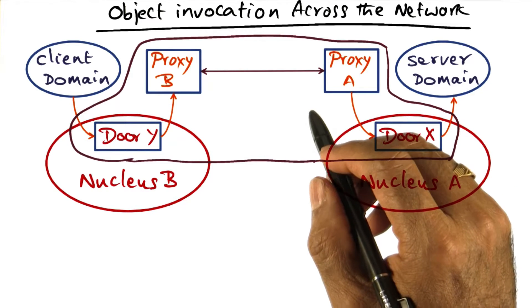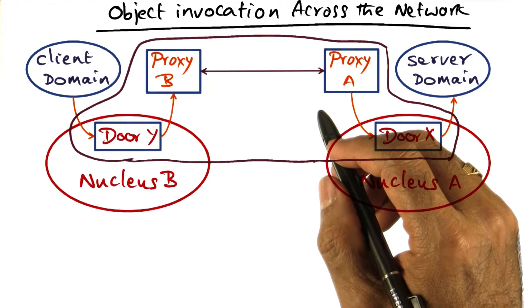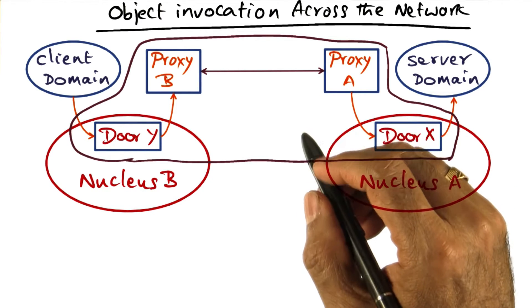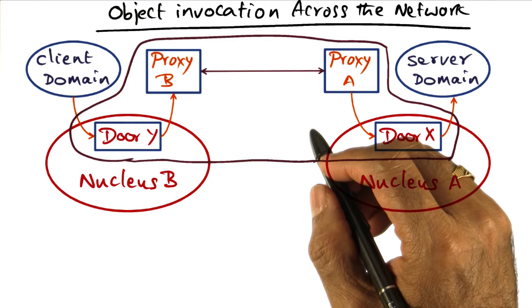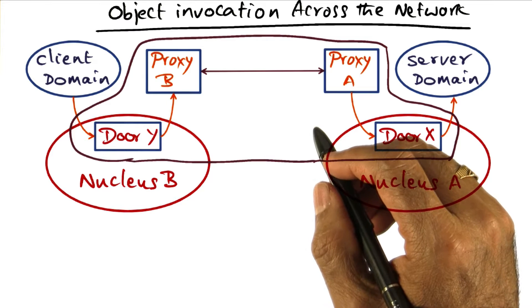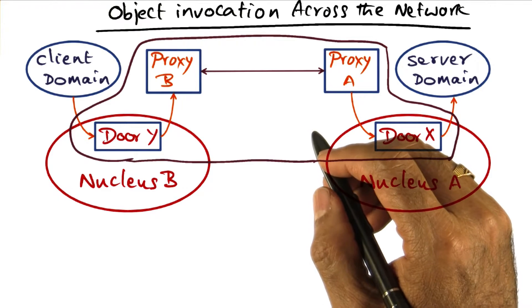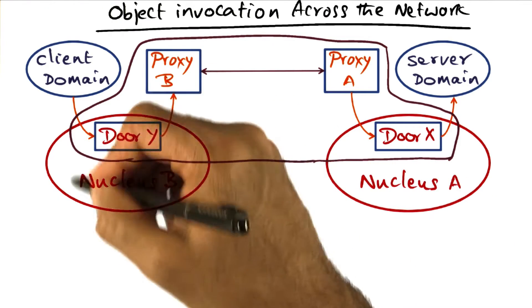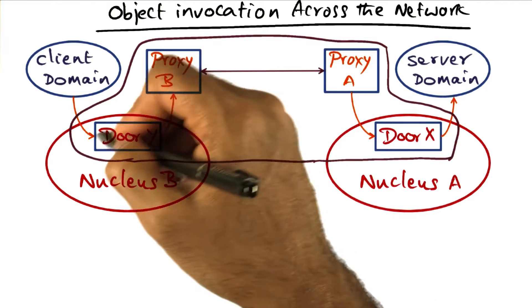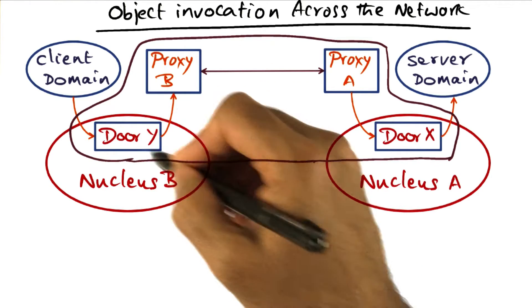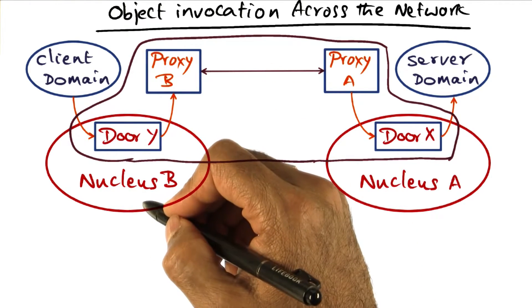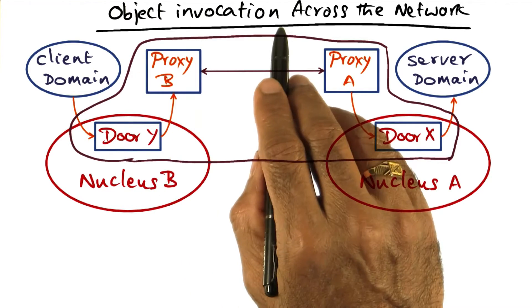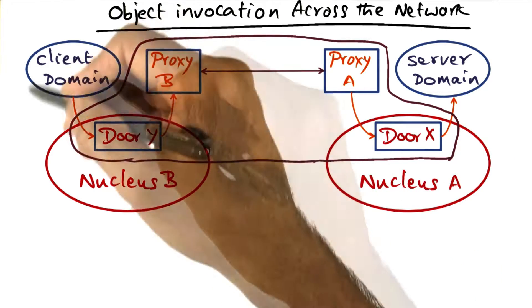As I mentioned, Spring is a network operating system. What I described just now is how object invocation works within a single node. But these doors are confined to the nucleus on a single node, and we need to be able to do object invocation across the network.